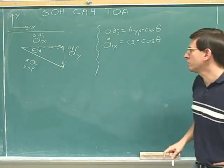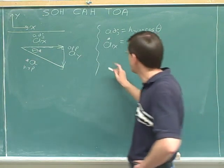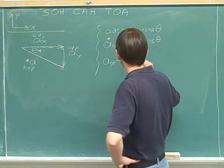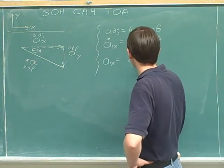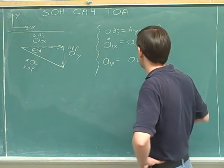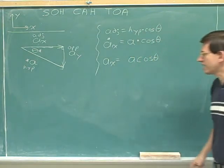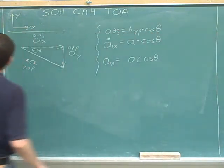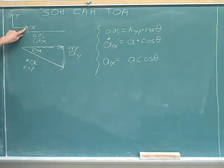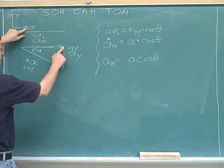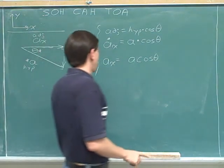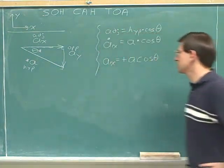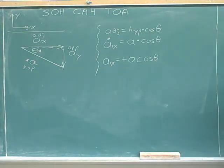And this is as far as we can go as far as the magnitude is concerned. So now let's figure out the sign component. We know the magnitude is a times the cosine of theta. We're still having right as our positive direction and a sub x is to the right, so this is positive. A sub x is positive a cosine theta.